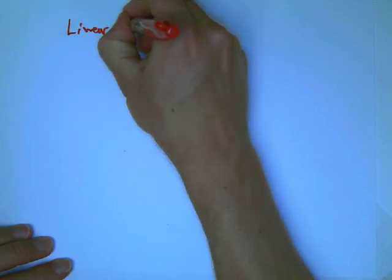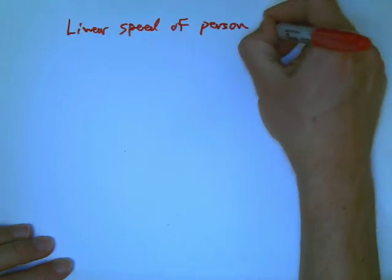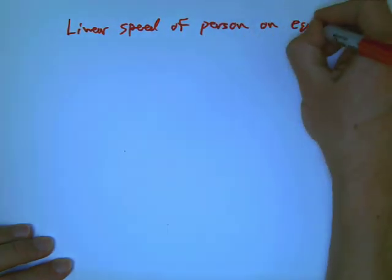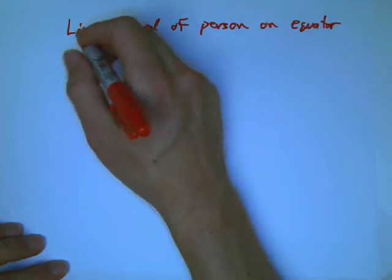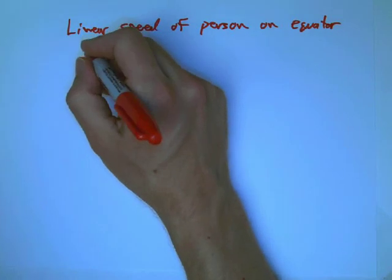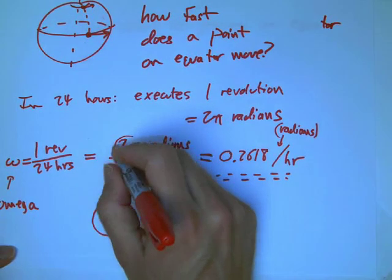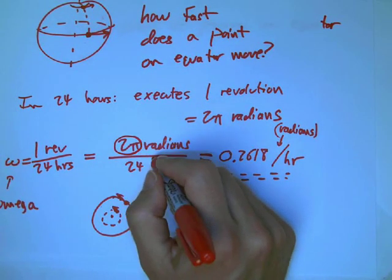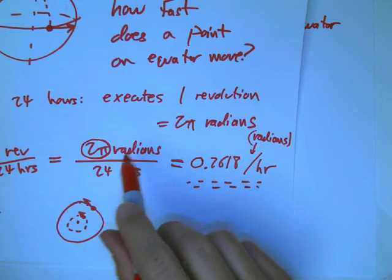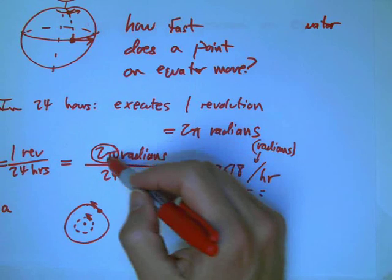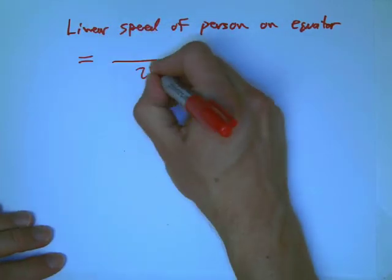So let's figure out the linear speed of a person standing on the equator. I remember when I first learned this, I was just amazed by this. Let's use s equals r theta. This tells us how much theta we do in 24 hours. And all we have to do is figure out what does that correspond to in terms of linear motion, in terms of how far you go.